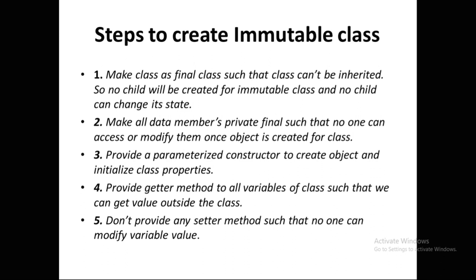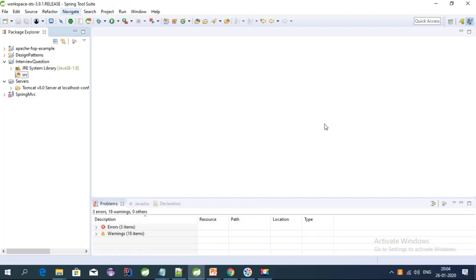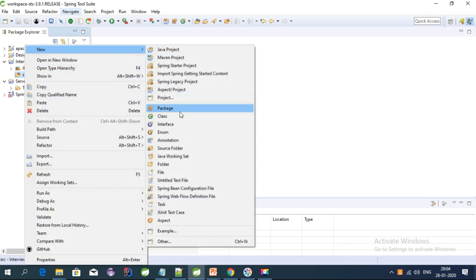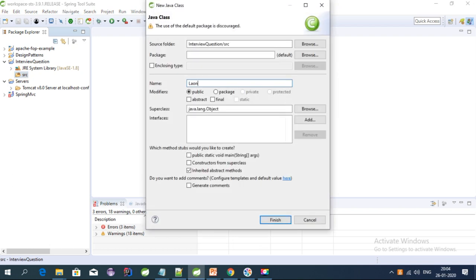We don't provide any setter methods so that no one can modify variable values. To summarize: make the class final, make all member variables private final, provide a parameterized constructor to create the object and initialize properties, and use getter methods to retrieve values. Let's say we have a Loan class and we want to make it an immutable class — let's do that.